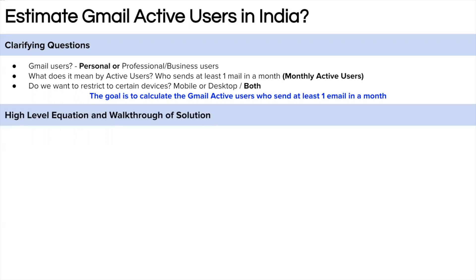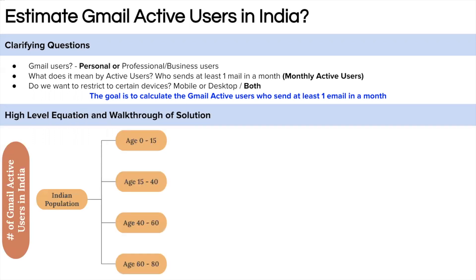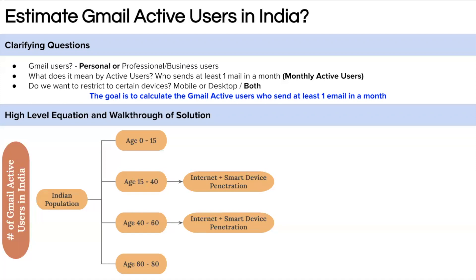Here is how we can approach this problem. First, start with the Indian population, then bifurcate it into various age groups. Next, consider internet penetration and smart device penetration, ignoring age groups below 15 and above 60, as they are either too young or too old to use Gmail. Then account for Gmail's market share among email services like Yahoo and Hotmail, and finally estimate the fraction of people sending at least one email per month.